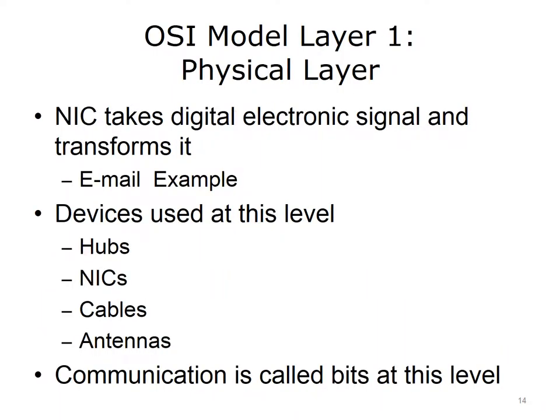At OSI model layer 1, known as the physical layer, the NIC takes the computer's digital electronic signal and transforms it into a signal that can be put on the NIC's media. An email translates into electronic impulses and moves from the NIC to the wires at the end of the RJ45 connector, which is at the end of a network cable. The electronic impulses are bits, or binary digits. The bits transmit across the entire cable length to the next device, usually a switch or router. Hubs, NICs, cables, and antennas are examples of devices that operate at layer 1. NICs operate in both layers 1 and 2, but primarily at layer 2. The communication at layer 1 is a bit.